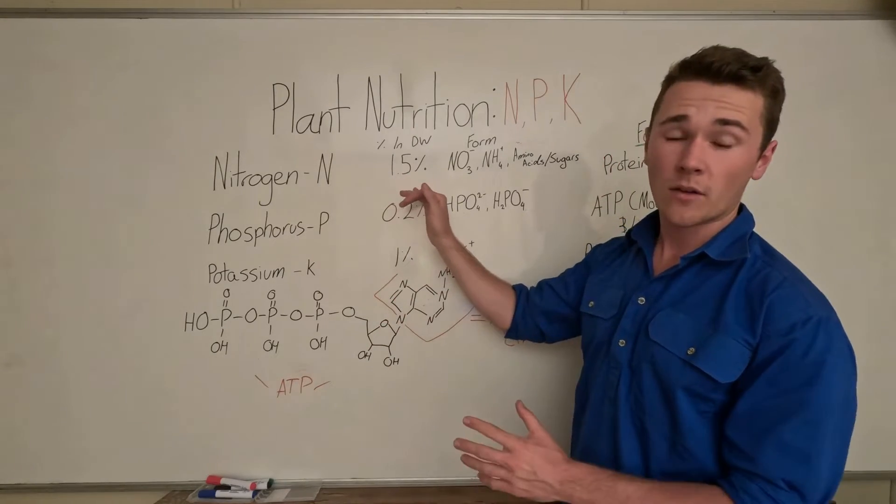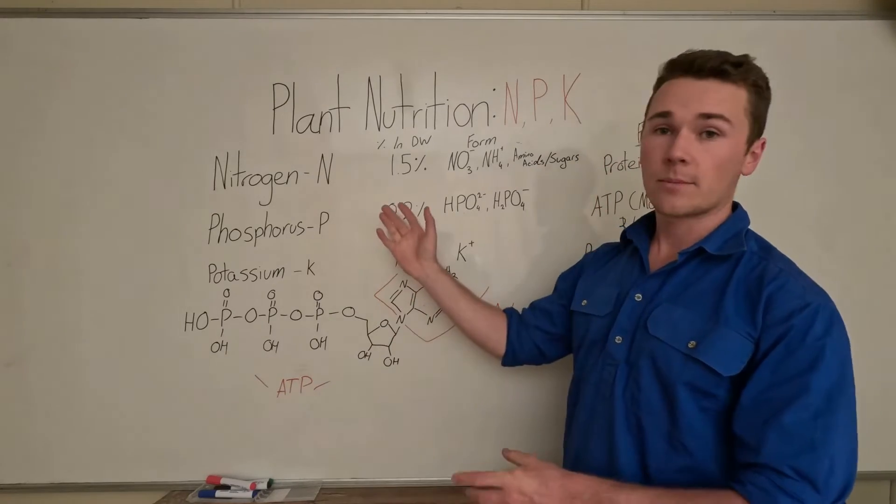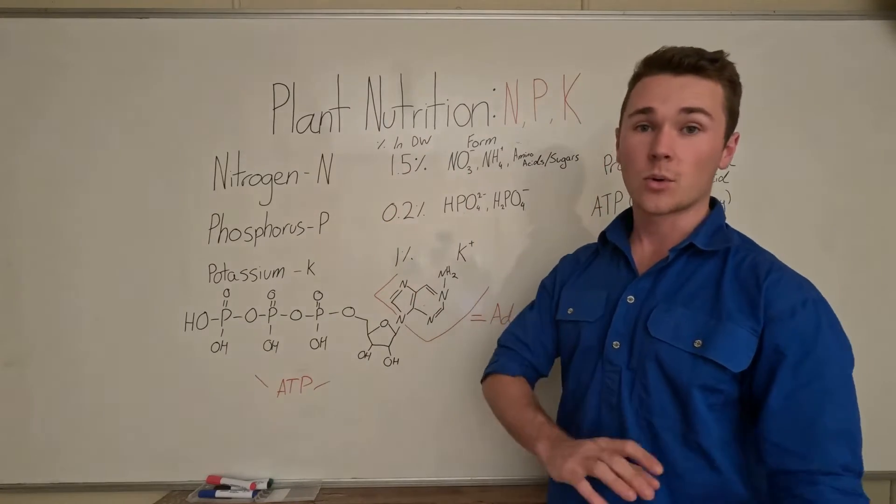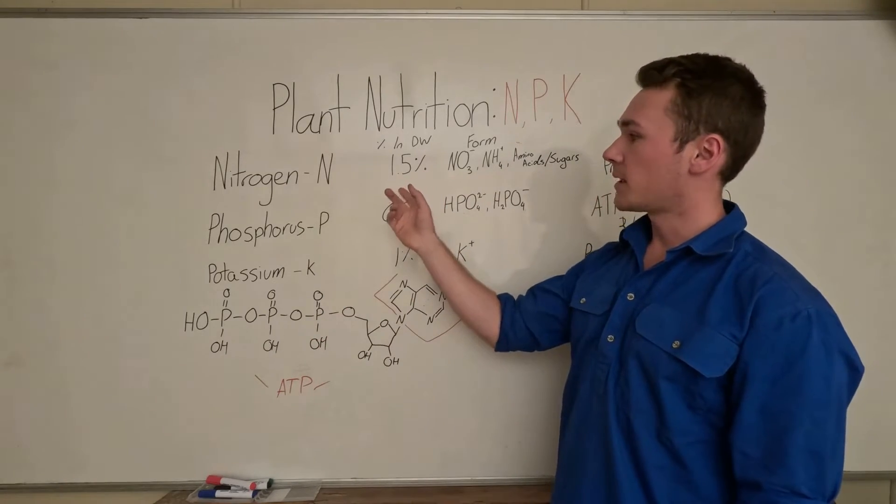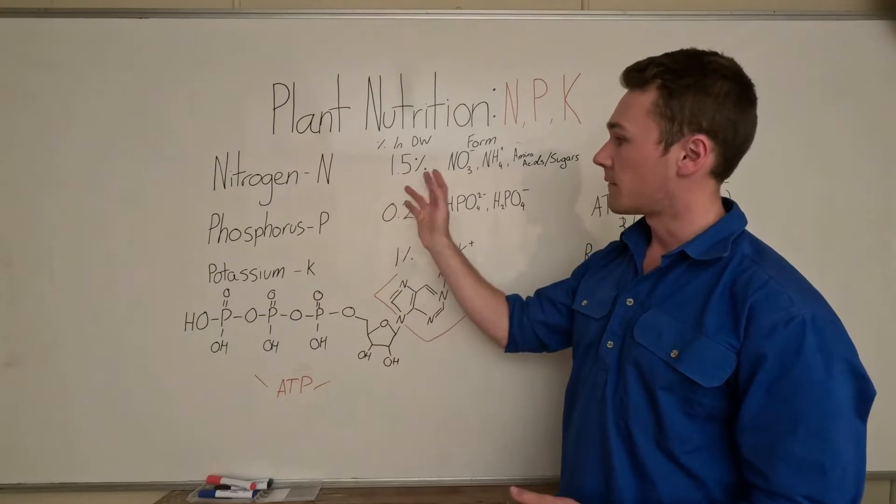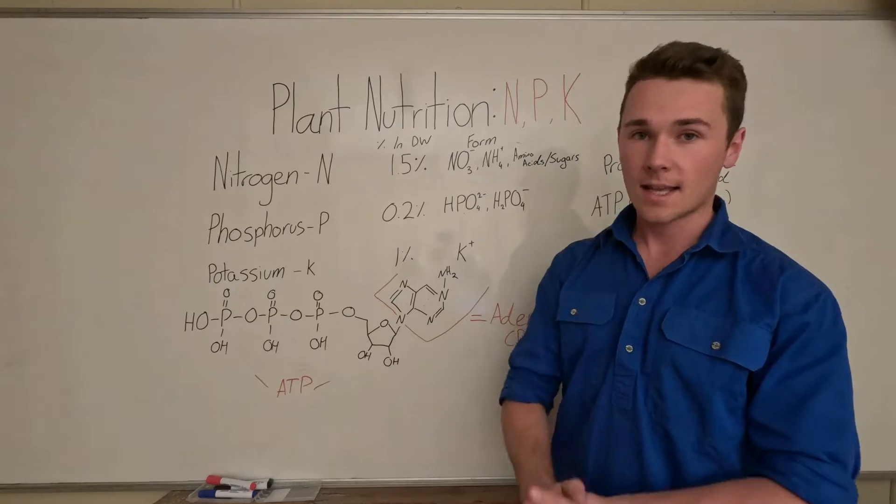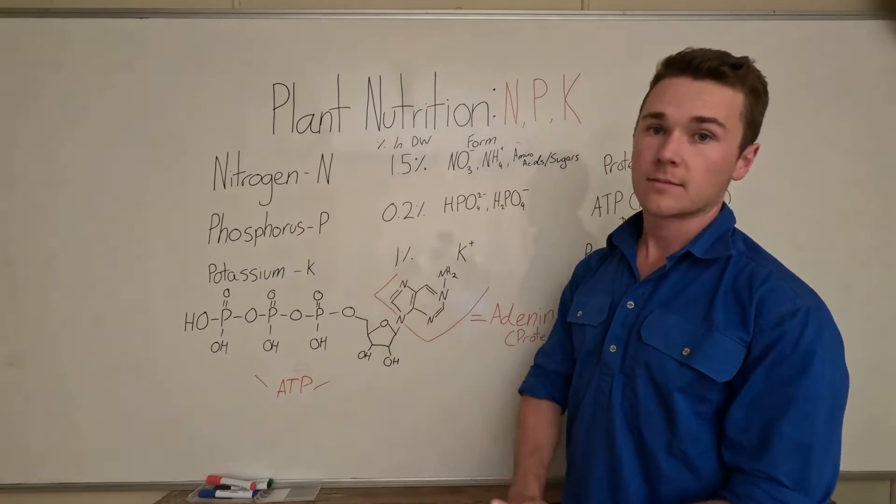So in the grand scheme of things, it actually doesn't make up that much, but it's the fourth most abundant nutrient in our plants. Then we have phosphorus at 0.2% and potassium at 1%.